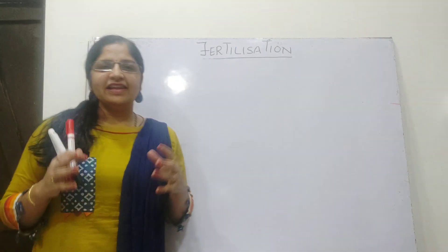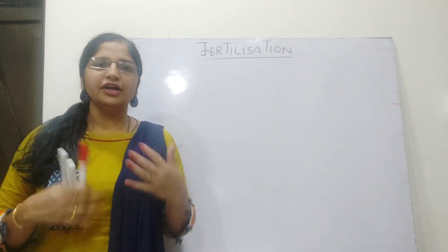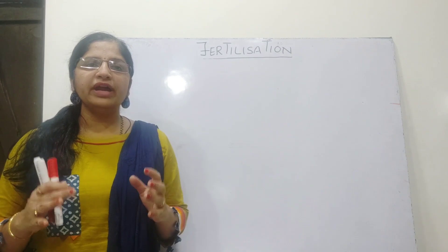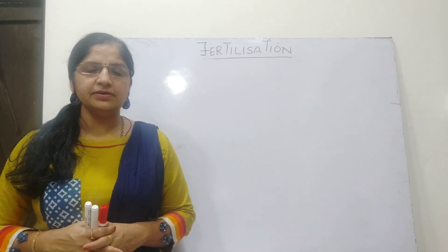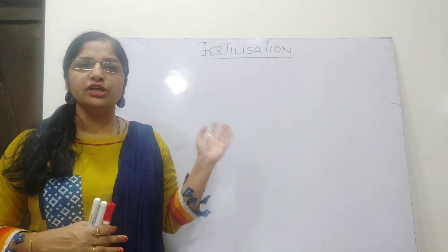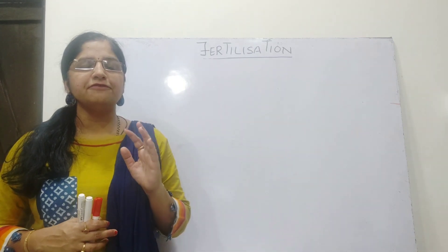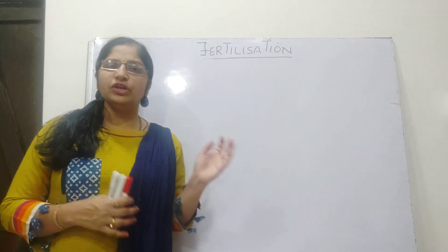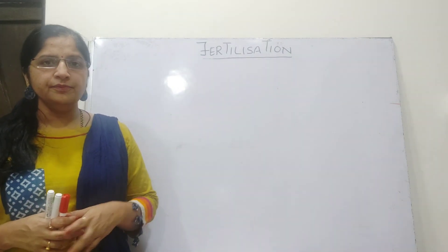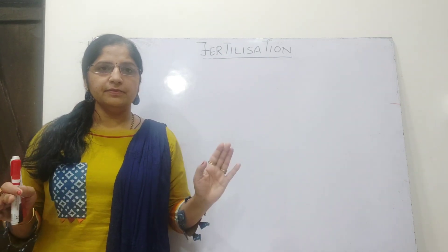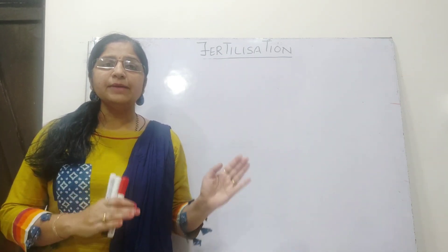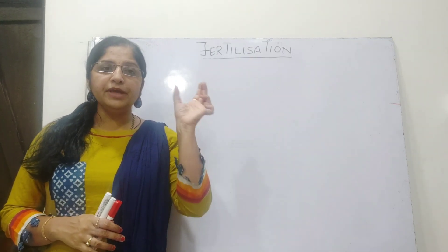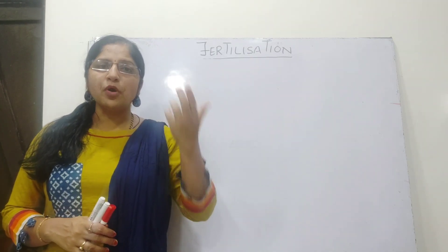Hello everyone, let's start with the next topic, continuing with the chapter. Today's topic is fertilization. Before entering into the topic of fertilization, first let's see how the pollen tube is coming to the female gametophyte or embryo sac. As we have already discussed in the previous video, once pollination is achieved and the right type of pollen grain has landed over the specific stigma, this pollen grain will go into the post-pollination process.